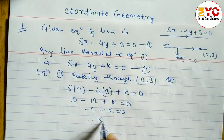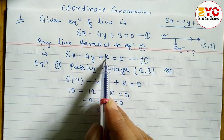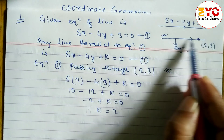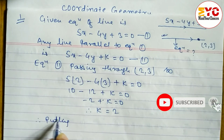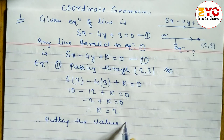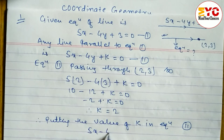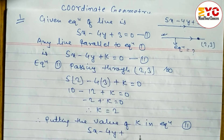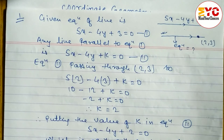From 10 minus 12 plus k equals zero, we get minus 2 plus k equals zero, therefore k equals 2. Now we put this value back into equation two: 5x minus 4y plus 2 equals zero. This is the required equation of the straight line.